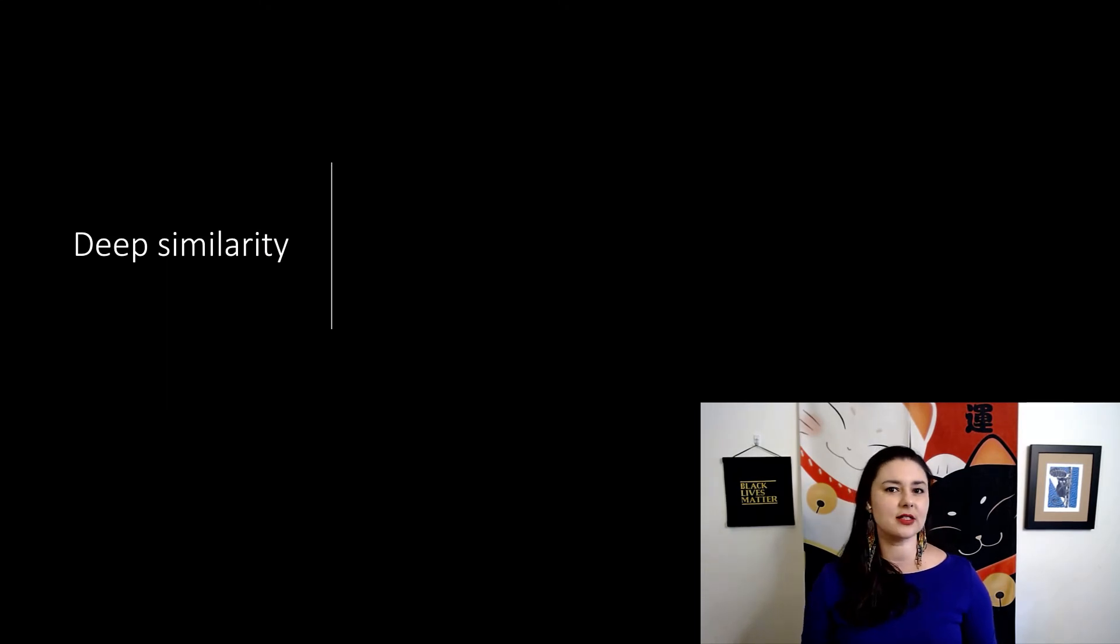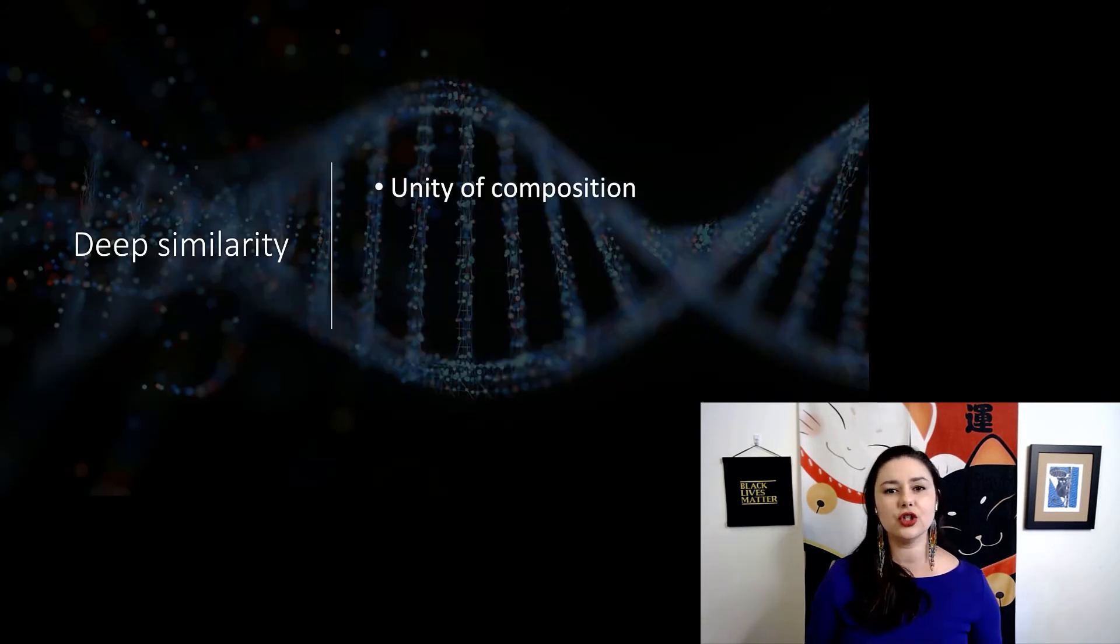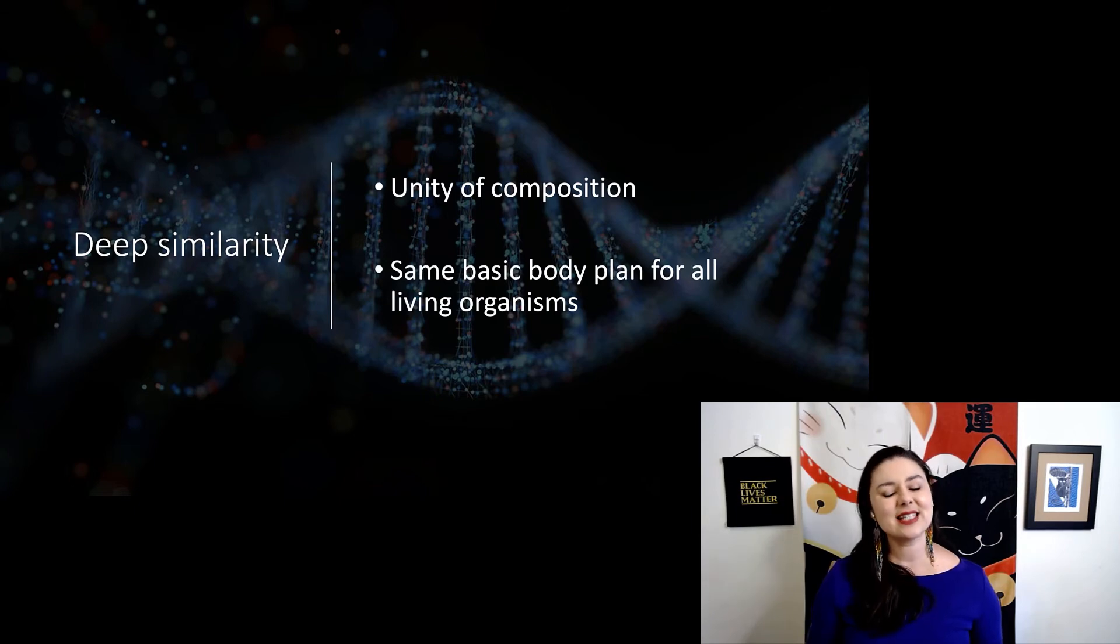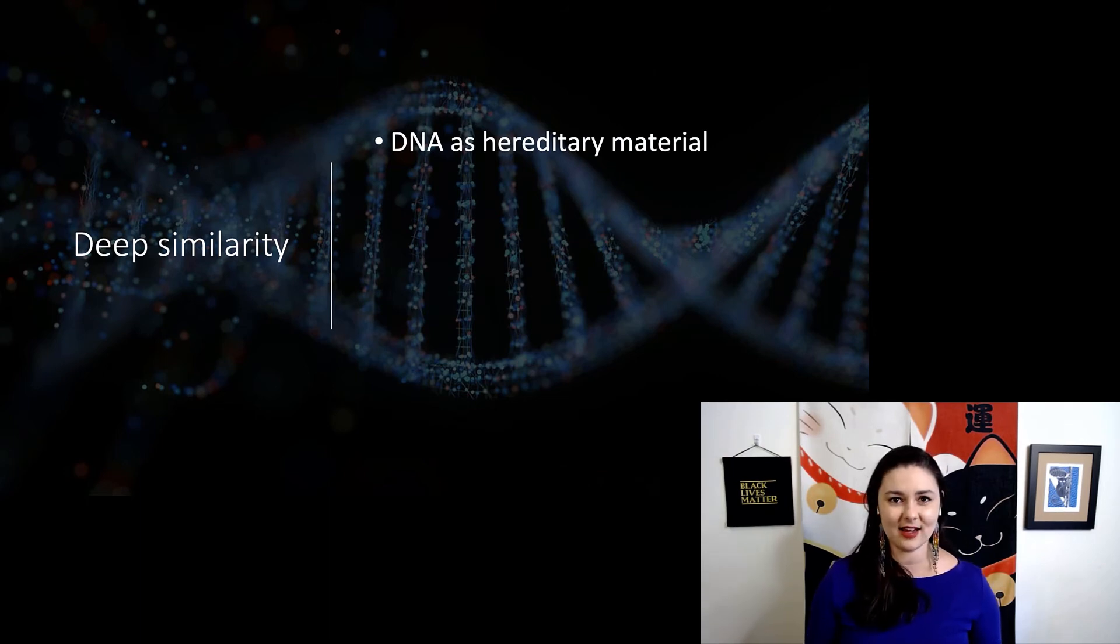Another thing we like to talk about with evolution is this idea of deep similarity. Deep similarity means that there is a unity of composition or that there's the same basic body plan for all living organisms. We'll talk more about this when we get to Darwin, but we see a couple of similar things for all life. All living things use DNA as our hereditary material. These are the molecules that we use to encode the characteristics that we pass on to our offspring. And this is true for all living organisms.